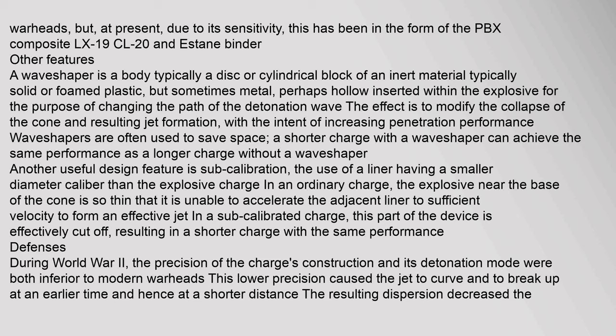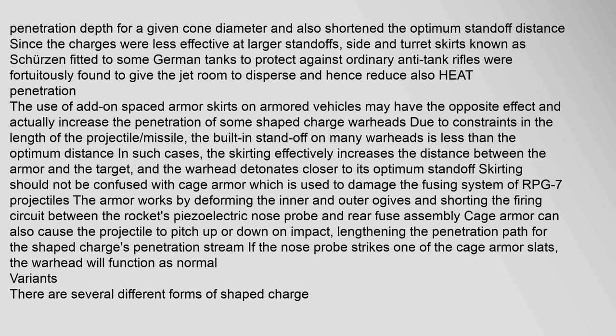Another useful design feature is sub-calibration: the use of a liner having a smaller diameter than the explosive charge. In an ordinary charge, the explosive near the base of the cone is so thin that it is unable to accelerate the adjacent liner to sufficient velocity to form an effective jet. In a sub-calibrated charge, this part of the device is effectively cut off, resulting in a shorter charge with the same performance. During World War II, the precision of the charge's construction and its detonation mode were both inferior to modern warheads, causing the jet to curve and break up at an earlier time.